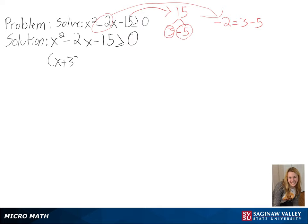And we get x plus 3 times x minus 5 is greater or equal to 0.